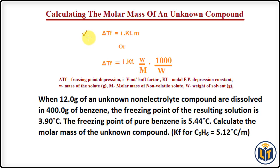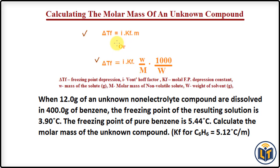This is the freezing point depression formula: Delta TF is equal to i times KF times M. Delta TF is freezing point depression, i is the van't Hoff factor, KF is the freezing point depression constant, and M is the molality. You can use any form of this formula — both are the same.